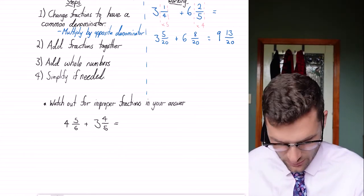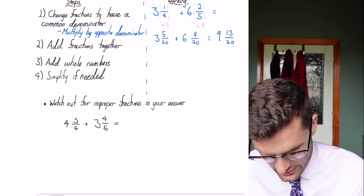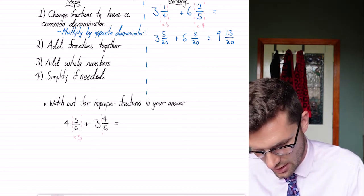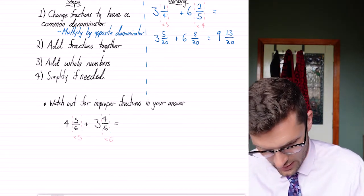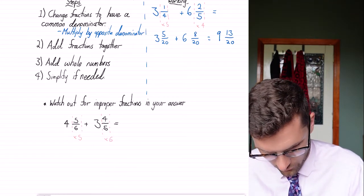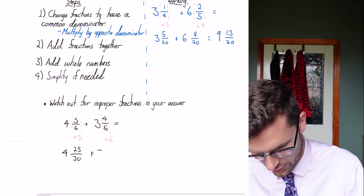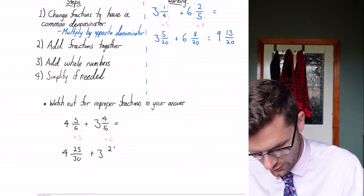We're gonna multiply this by the denominator five and multiply this by six. This gives us four 25 over 30 plus three 24 over 30.